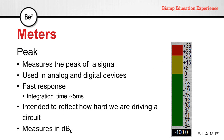Peak meters measure the peak of a signal. They can also be found in analog or digital devices, but the main difference is that they have very fast response. The integration time is usually in the range of 5 milliseconds. They are intended to reflect how hard we are driving a circuit, giving us an instant response to an incoming signal. Measurements are also done in dBu.